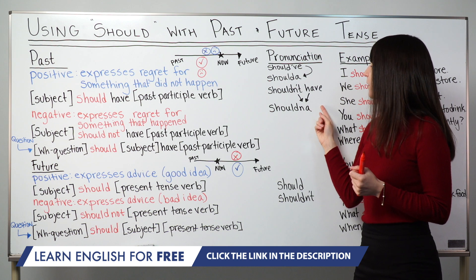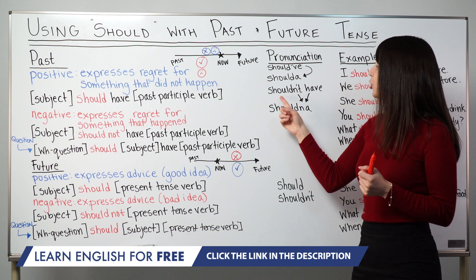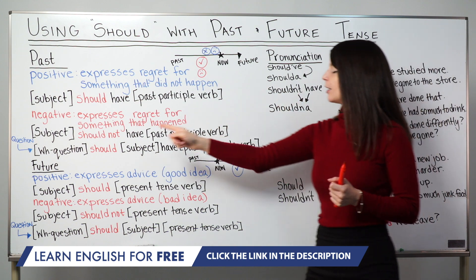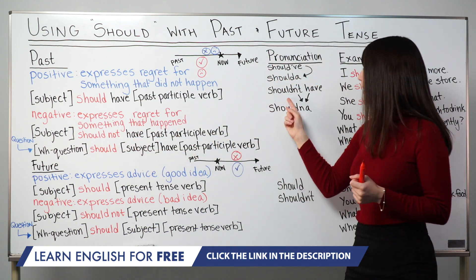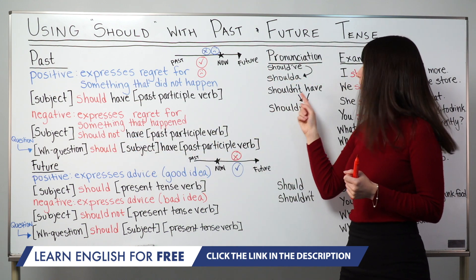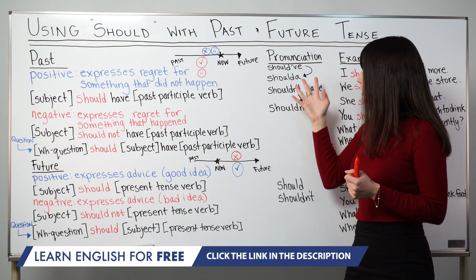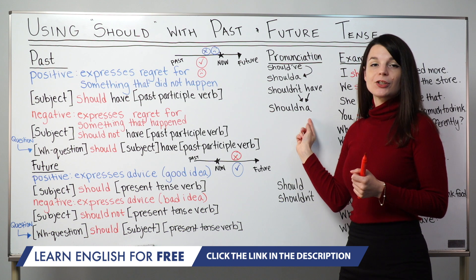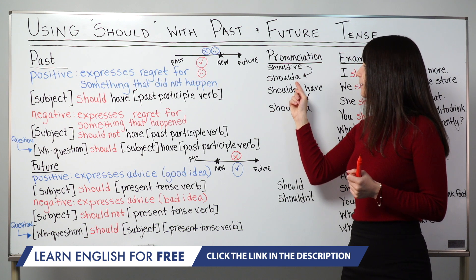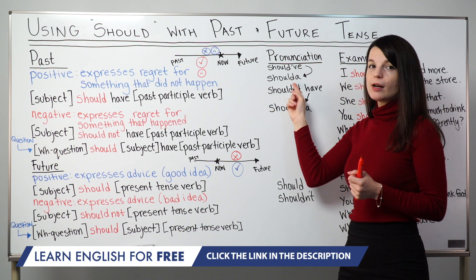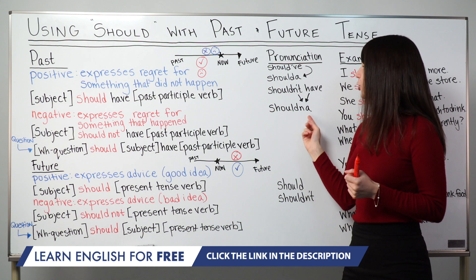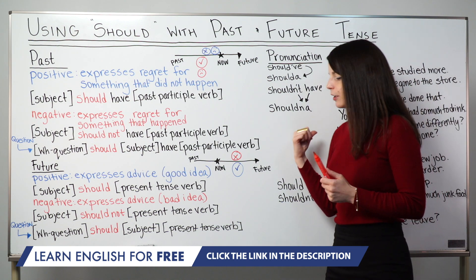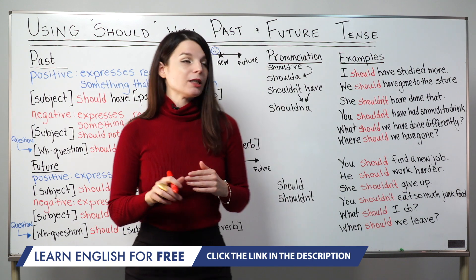For the negative, shouldn't have — we contract should not to shouldn't, giving us shouldn't have. To make it even shorter, we often say shouldna. So: positive is shoulda, negative is shouldn'ta. These are key pronunciation points that will help with your listening and also help you sound more natural. Let's take a look at some examples that use these patterns.